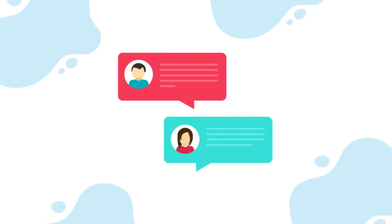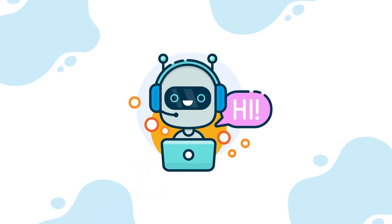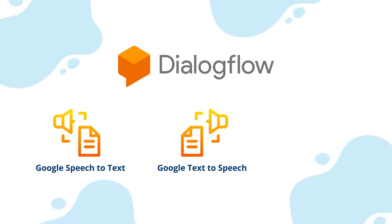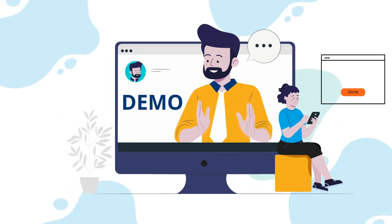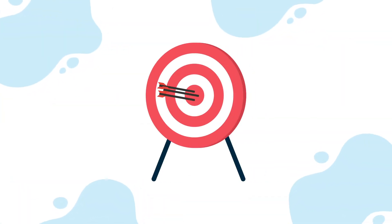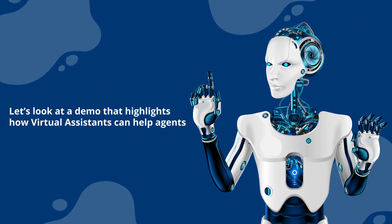Just like the chat channel, when a customer calls using a voice channel, Servion built the same experience using the same virtual assistant — Google Dialogflow — along with other services like Google Speech-to-Text, Text-to-Speech, and sentiment analysis. We understand that not every virtual agent automation use case is 100% accurate, so organizations can opt for strategies like digital deflection, traditional key-press IVR, or agent transfer for fallback scenarios.